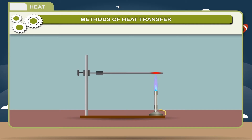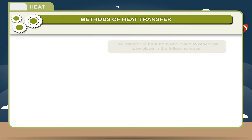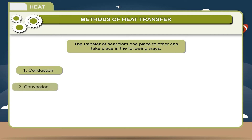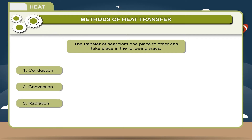Methods of heat transfer: whenever there is a difference in temperature, heat starts flowing from high temperature to low temperature. The transfer of heat from one place to another can take place in the following ways: (1) conduction, (2) convection, (3) radiation.